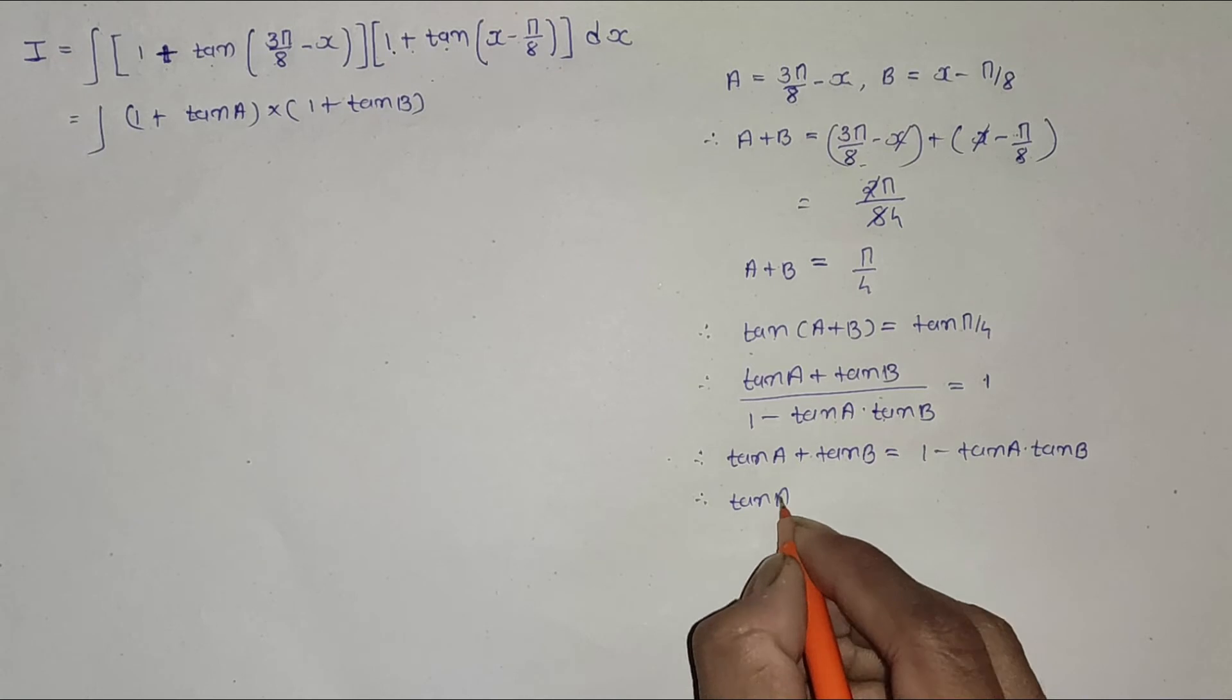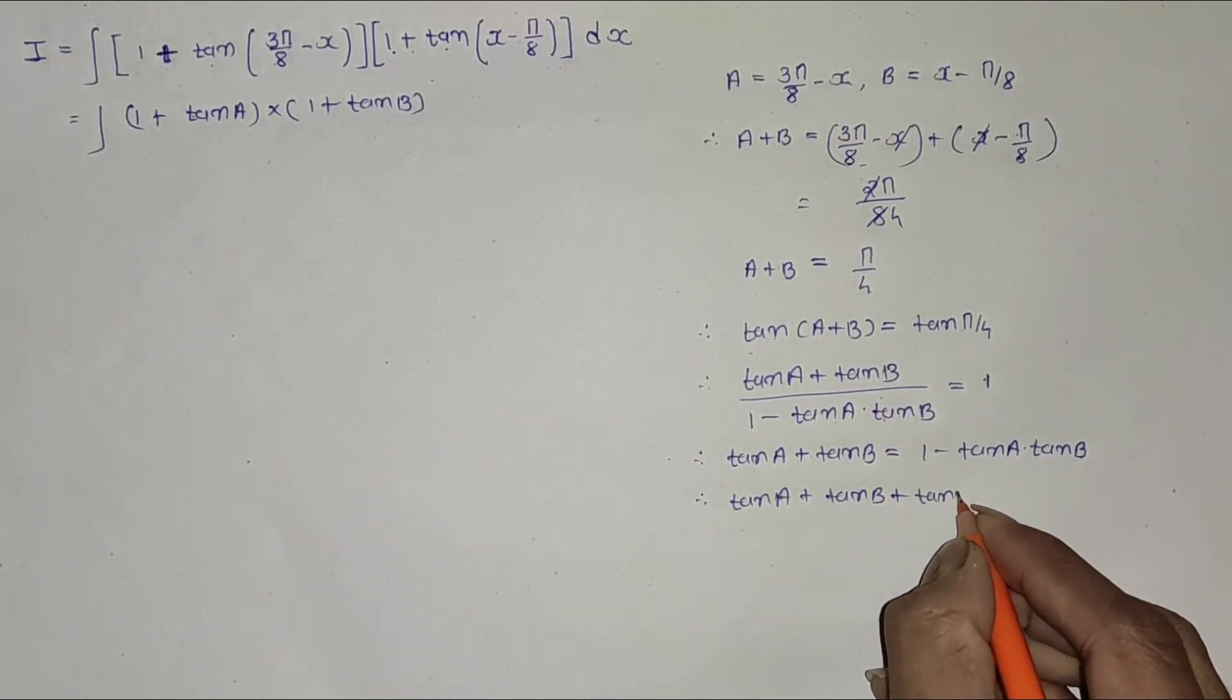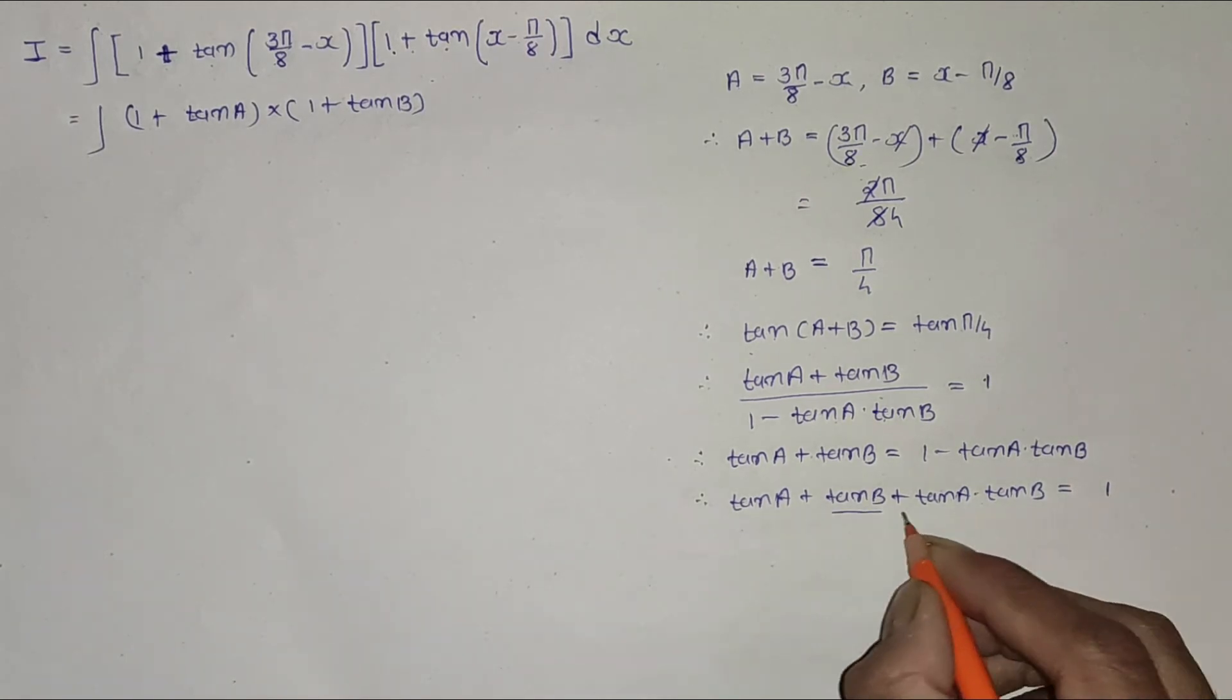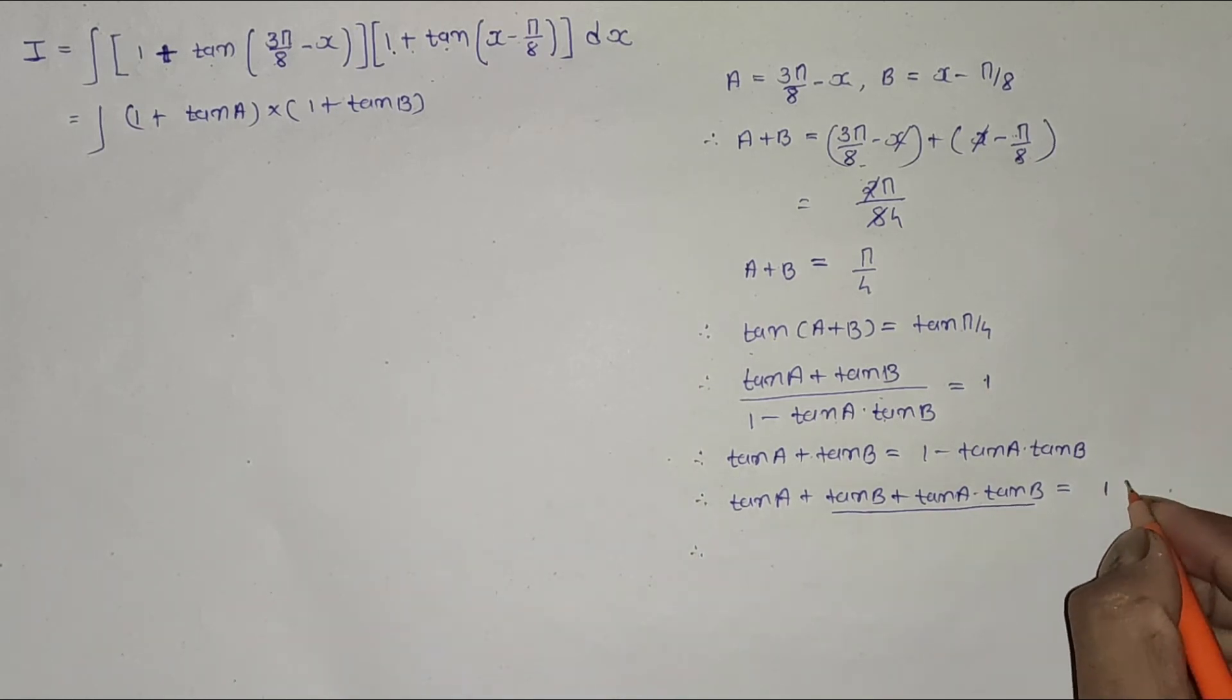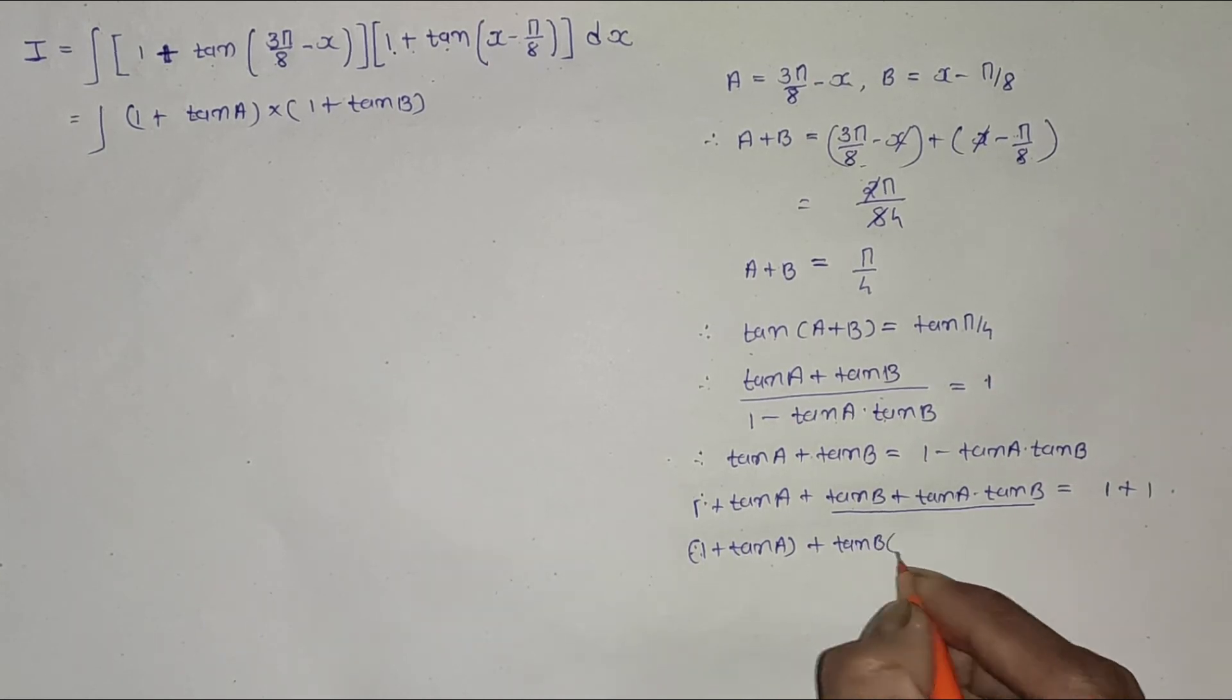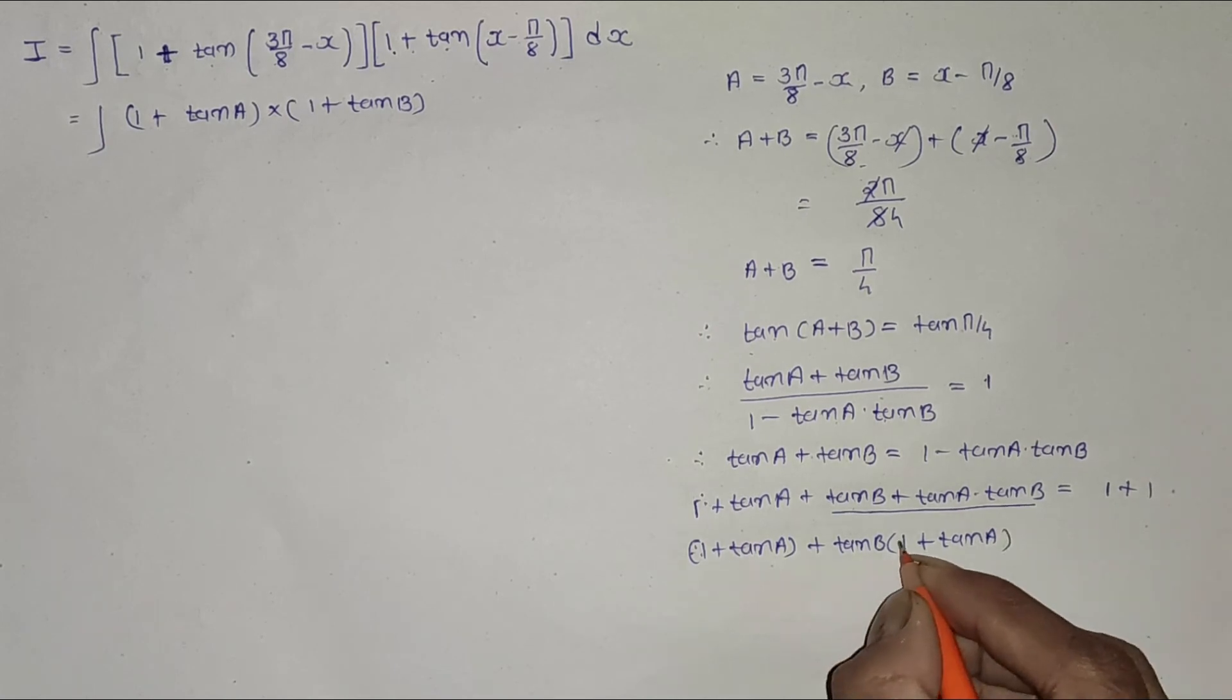So tan a plus tan b plus tan a · tan b equals 1. Now take tan b common from the last two terms: tan a plus tan b(1 + tan a) equals 1.